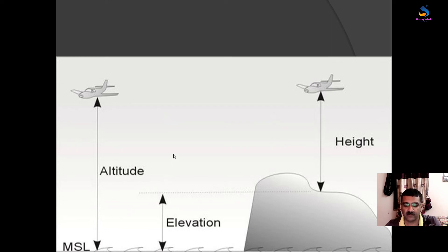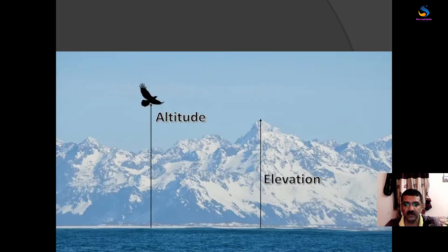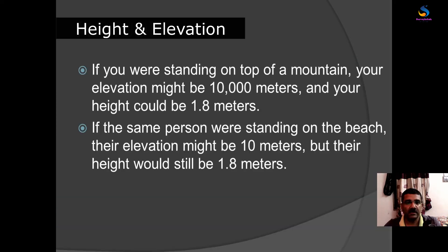Now let's clarify with the next figure. Here we have the top of a hill and mean sea level. The measurement from mean sea level to the top of the hill is called elevation, and the distance from mean sea level to a flying bird is called altitude.